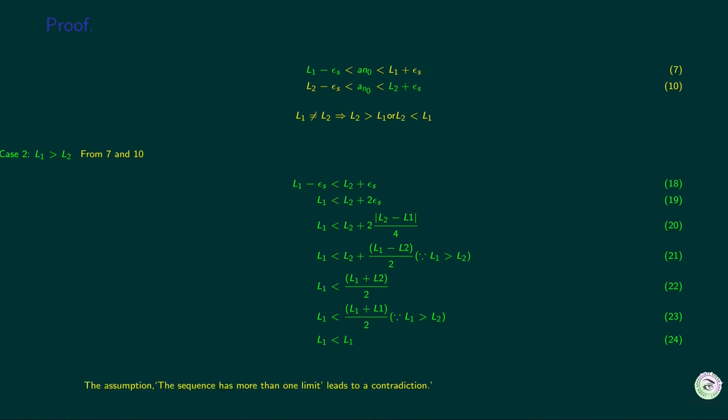The assumption that the sequence has more than one limit leads to a contradiction. Therefore, the assumption is wrong. That is, we conclude that the sequence can have at most one limit.